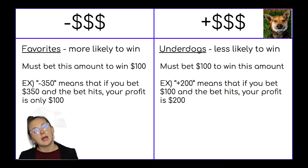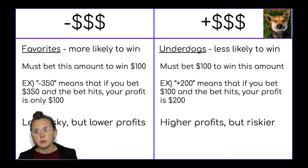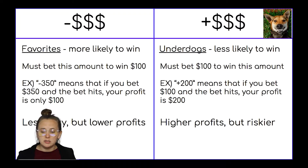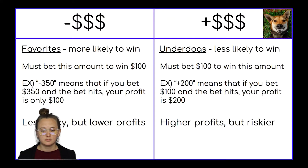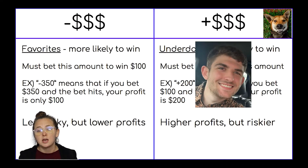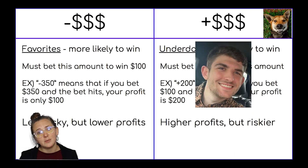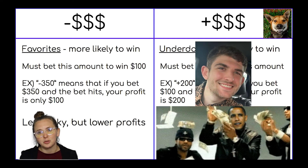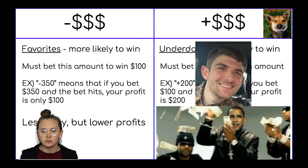So negative money bets are less risky but result in lower profits, whereas plus money bets result in higher profits but are riskier. If you're anything like our good friend Sale, you will only bet on underdogs, which are plus money lines, because when you win you like to make it rain, baby. But you probably don't win as often — so there's that too.